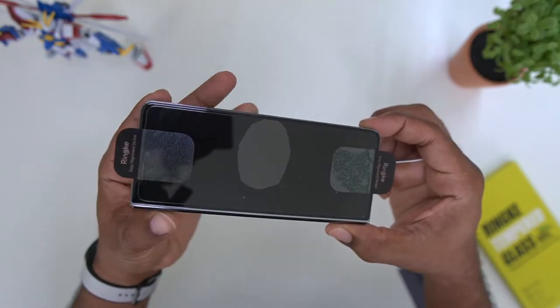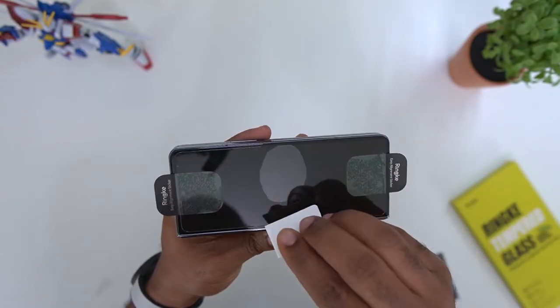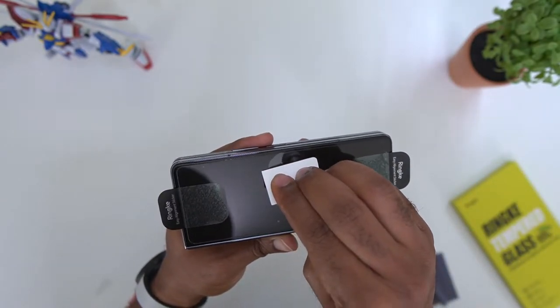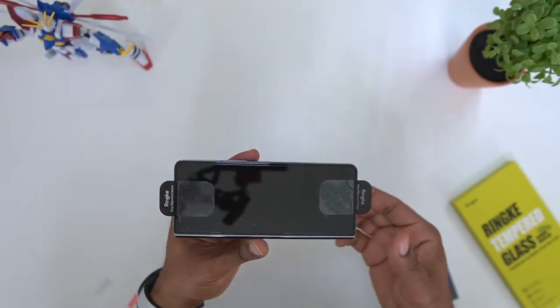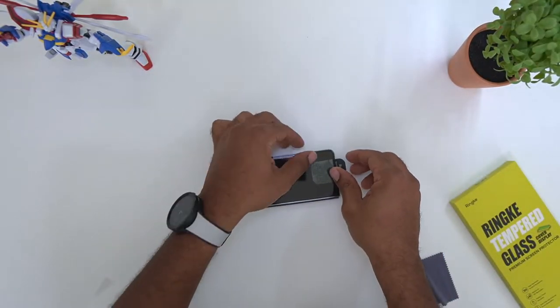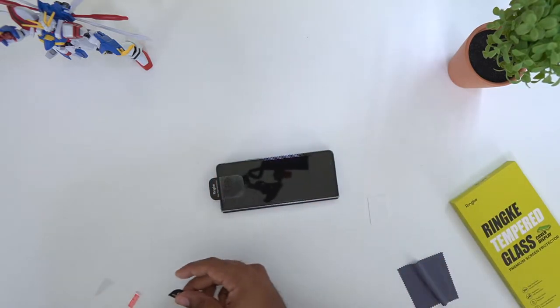I got one giant air bubble, so I'm going to just push that air bubble right out of the side. That should be about it. Next thing we got to do is take these stickers off, so I'm just going to peel one, peel two.